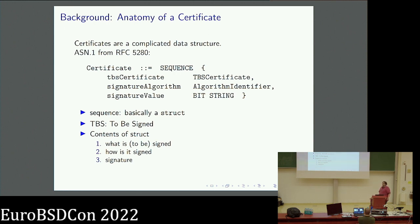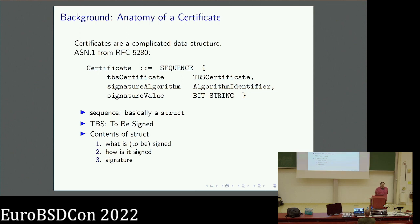Before I talk about the validator, I'd like to give some background on certificates. What is a certificate? It's a complicated struct. The ASN.1 definition is a sequence consisting of a TBS certificate, a signature algorithm, and a signature value. A sequence is basically a struct. TBS means 'to be signed' — the contents are something to be signed, something that says how it is signed, and the signature itself.